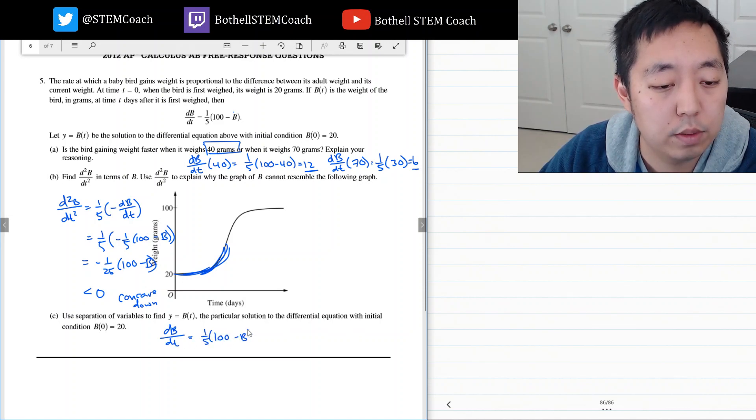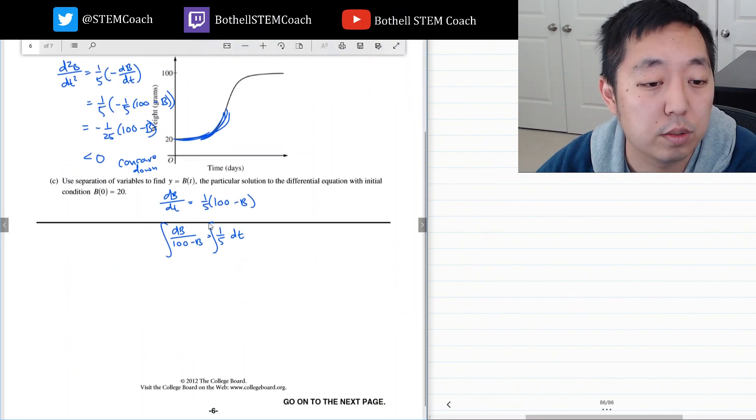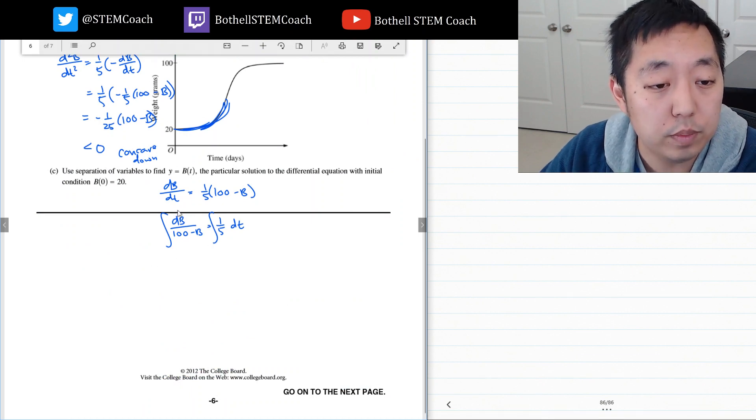I bring everything with b to this side, so db over 100 minus b, and I bring the dt to the other side, it will be one-fifth dt. Then I integrate. I'll continue the integral over here just because, oh actually I can scroll down. That's fine.